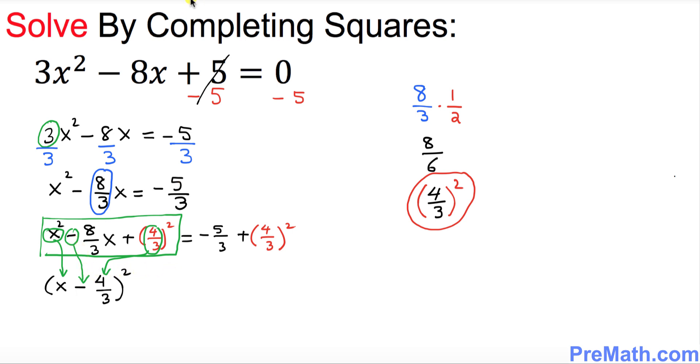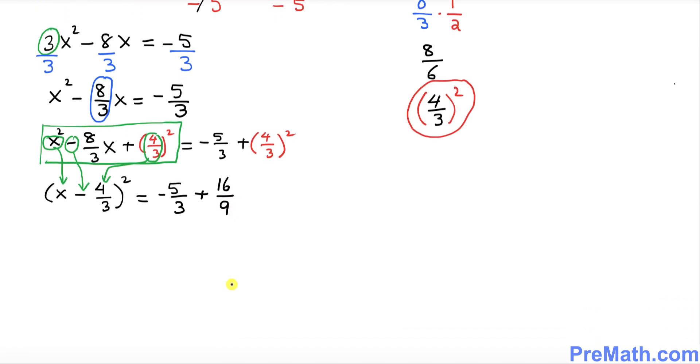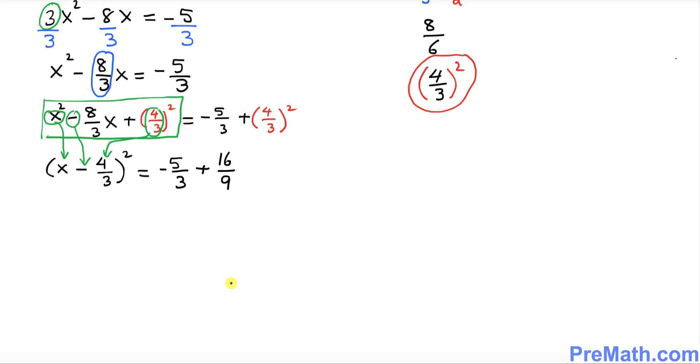Equals to negative 5 over 3 and then this could be written as 16 over 9. Now the next thing we're going to do is I want you to just go ahead and write down this part somewhere here. So I put these fractions right up here as you can see.